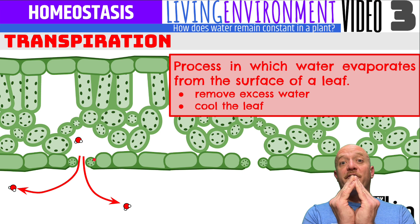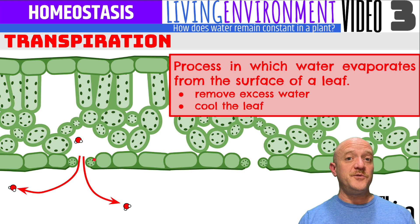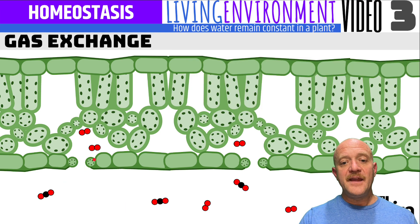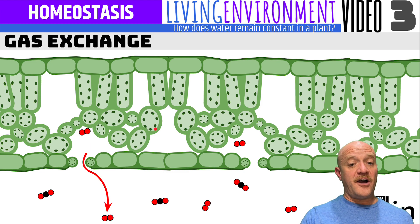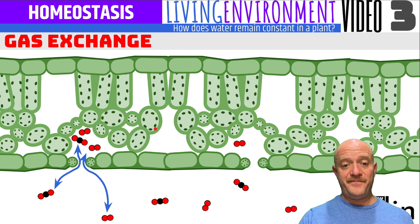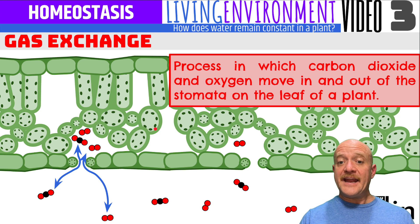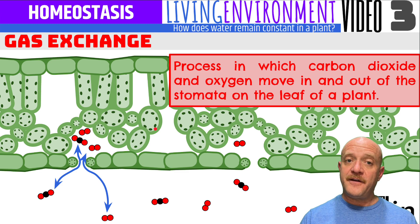When the guard cells are full, they open up. When they don't have a lot of water, they close up, minimizing the amount of water loss. The guard cells and stomata also allow for gas exchange — when we have oxygen moving out and carbon dioxide moving in. Gas exchange is a process in which carbon dioxide and oxygen move in and out of the stomata on the leaf of a plant.